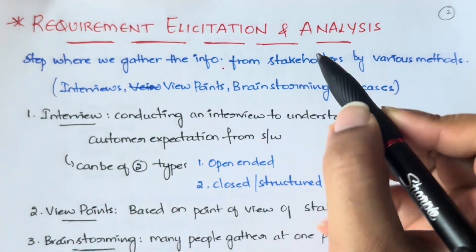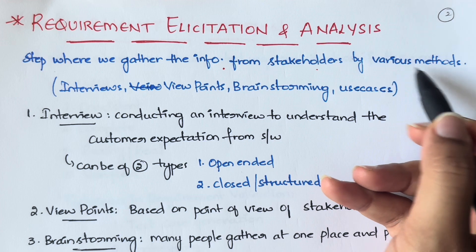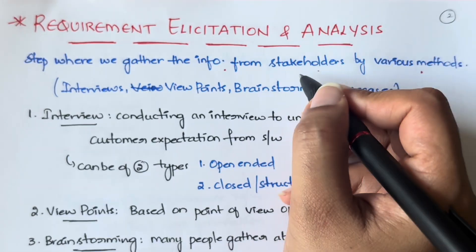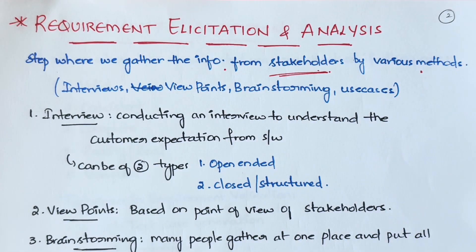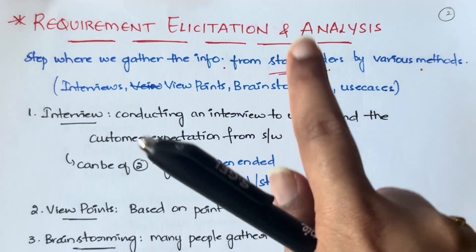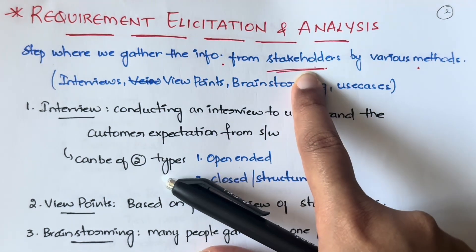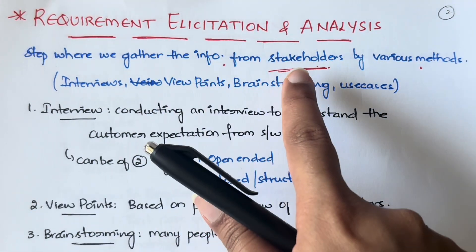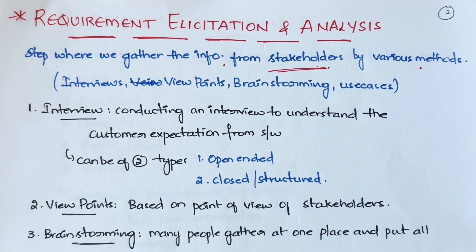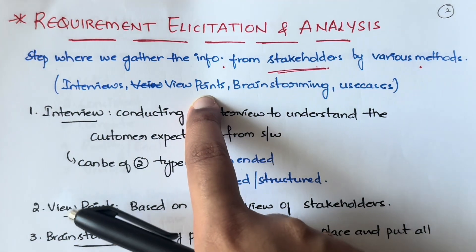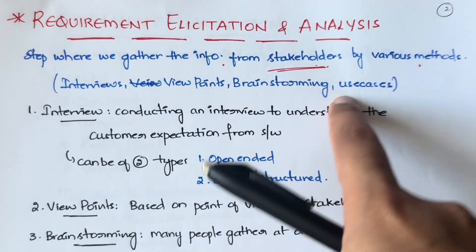This is the step where we gather information from the stakeholders using different methods. What are stakeholders? They could be customers, developers, managers - basically anybody who is involved in using the project or using the software. So you gather information from different people using different methods. The main ones are: interviews, viewpoints, brainstorming, and use cases.